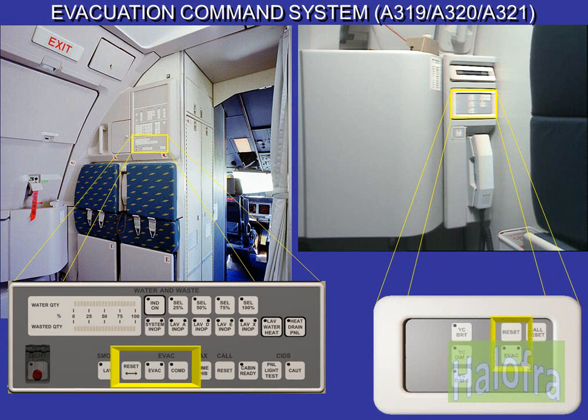The emergency evacuation command may be activated either from the cockpit or the PERSA station. An evacuation signal and a horn reset push button are located at the PERSA station, at the aft left crew station and in the cockpit.